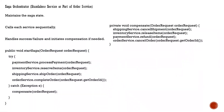The Saga flow starts in this method. In the try block, first it calls payment processing. Once that is completed and successful, it calls reserve items on the inventory service. Once that is done, it calls the shipping service to ship the order.